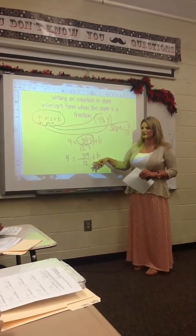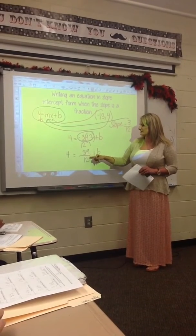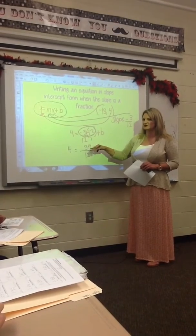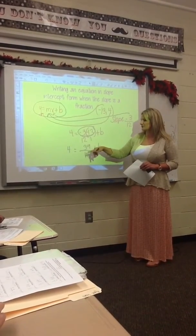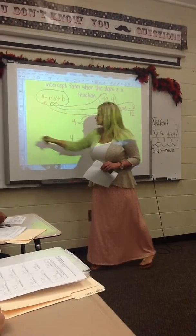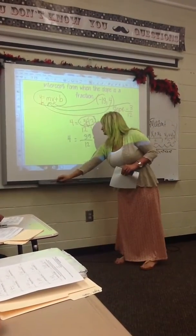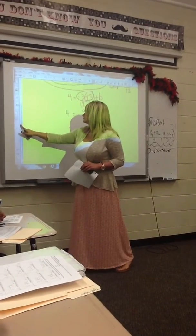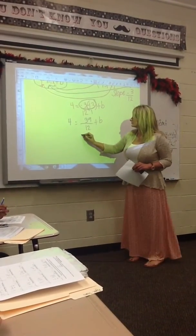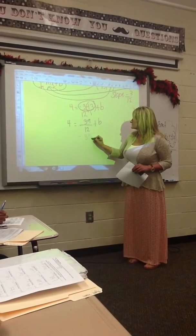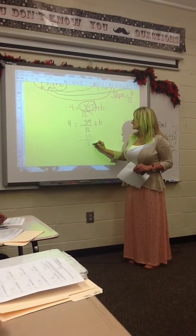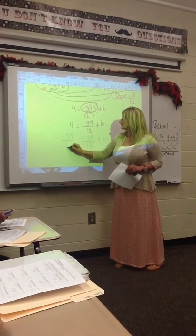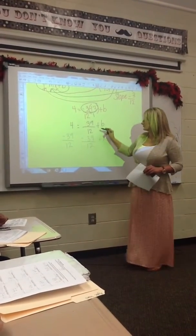We have to isolate b, so we have to do the opposite of a positive 39 over 12 and make it a negative. So we're going to subtract 39 over 12 from both sides — subtract 39 over 12 from this side and subtract 39 over 12 from the other side.